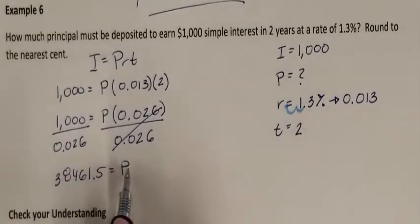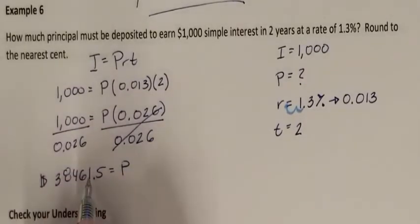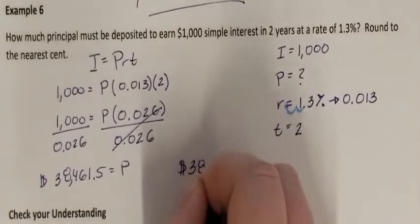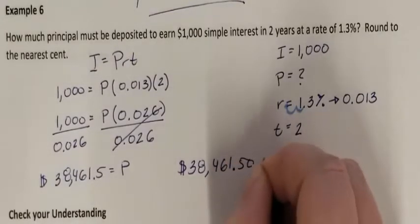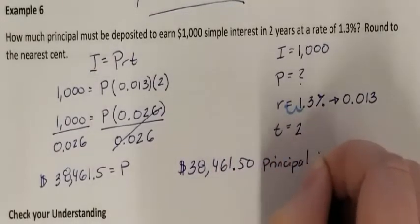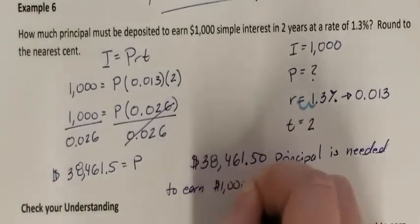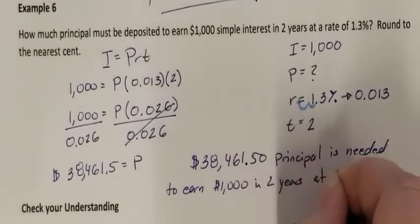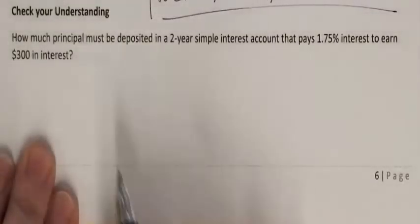These cancel each other out, and 1,000 divided by 0.026 gives me 38,461.50 as my P. This is a dollar amount, so $38,461.50 of principal is needed to earn $1,000 in 2 years at 1.3%.